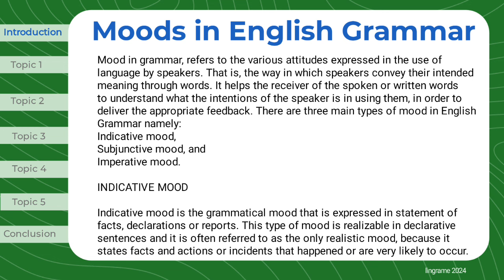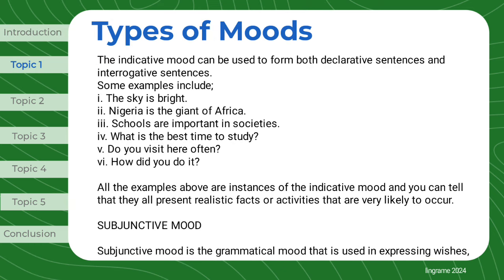Indicative mood is the grammatical mood that is expressed in statements of facts, declarations, or reports. This type of mood is realizable in declarative sentences, and it is often referred to as the only realistic mood because it states facts and actions or incidents that happened or are very likely to occur. The indicative mood can be used to form both declarative sentences and interrogative sentences.